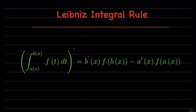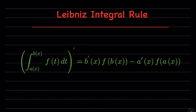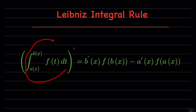Suppose you're given a function of this form: the integral from a(x) to b(x) of the function f(t) dt. You notice that the lower bound and the upper bound here are functions of x. Suppose we want to differentiate this function — it is going to be a function depending on x — and I want to take a derivative. The Leibniz integral rule tells you that the derivative is going to be computed by this formula.